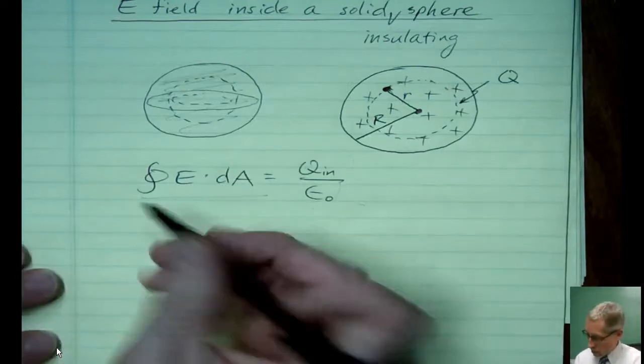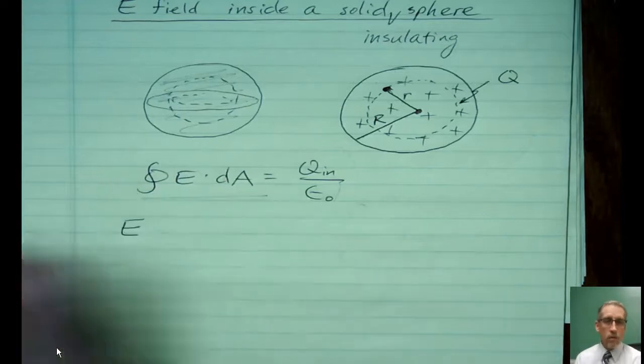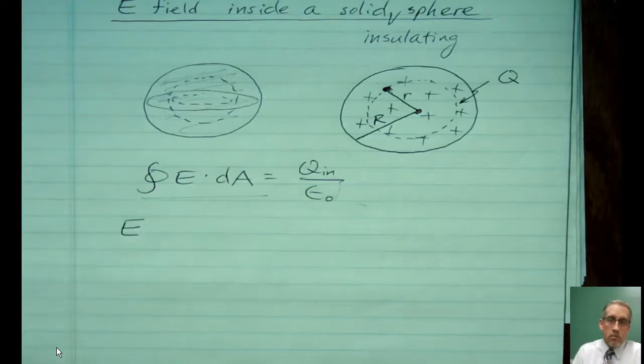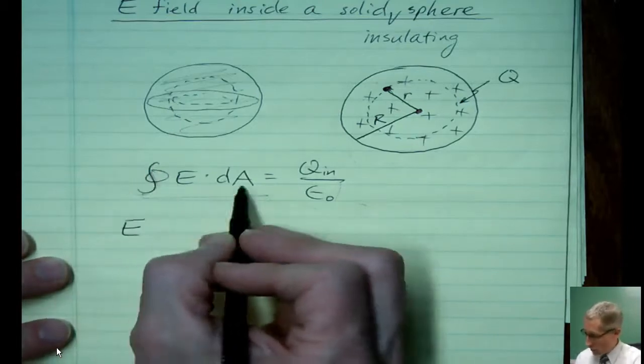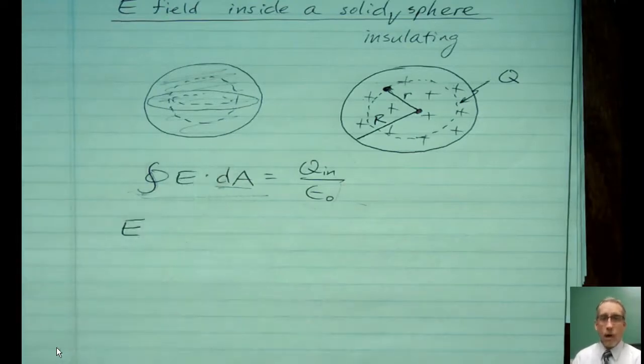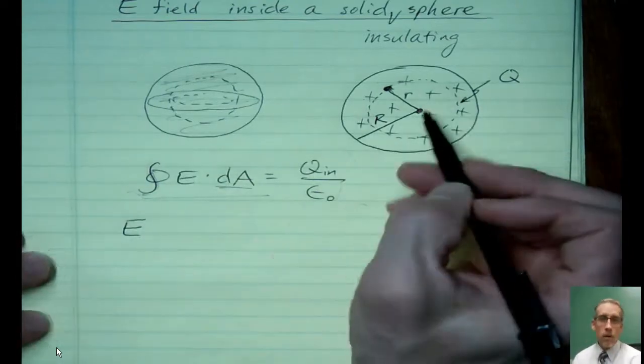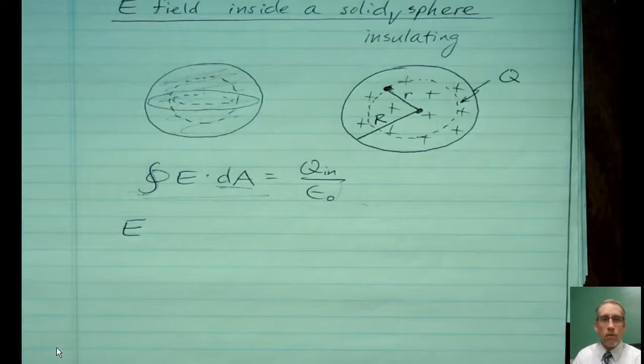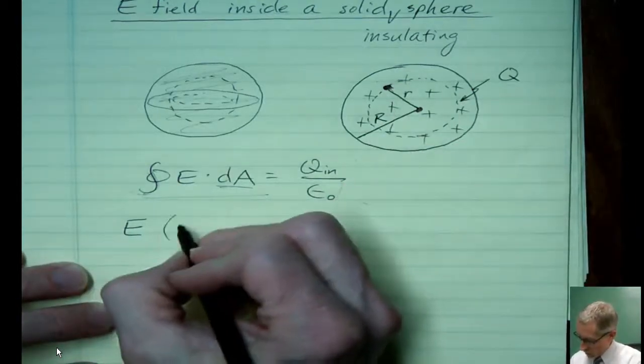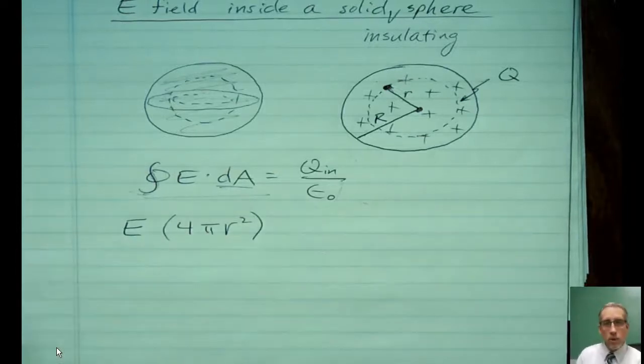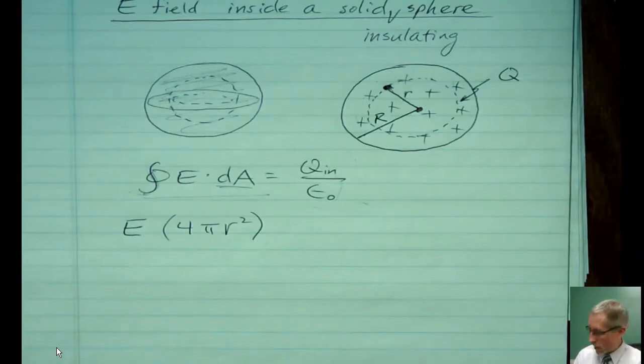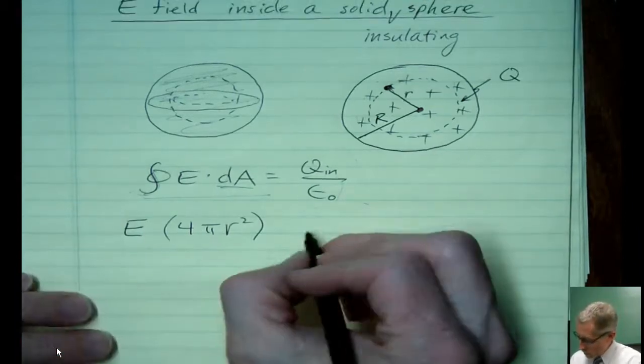So that means I can actually take E and pull it out of the integral because it's not really a variable, it's just some number. And then what do I have left? I have this, the sum - that's what integrals mean - the sum of all the little areas where I have flux. If you want a Gaussian sphere, that would be the surface area of the sphere. And how big is this sphere? Well, it's 4πr². Don't confuse it with the volume of the sphere. We're not talking about that on this side. Okay.